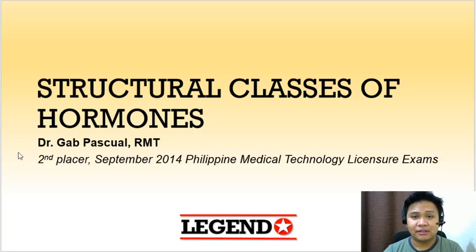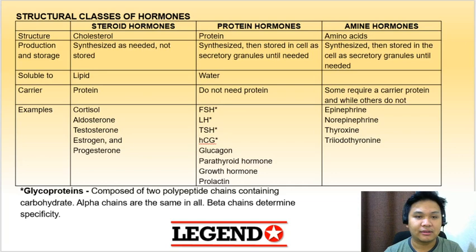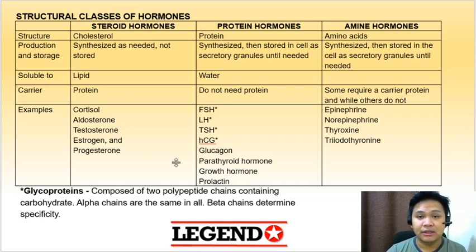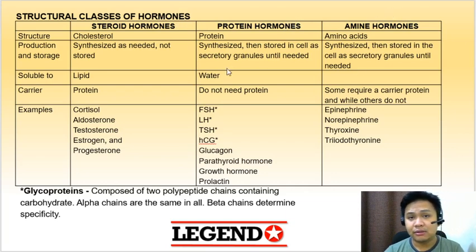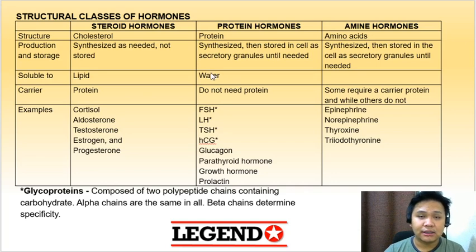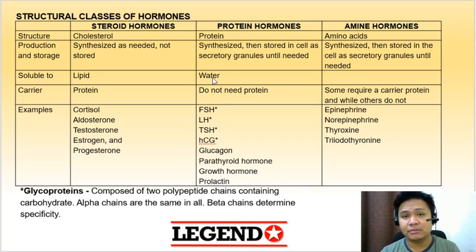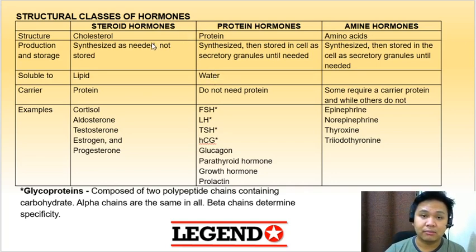This video is on the structural classes of hormones. There are three structural classes of hormones: steroid hormones, protein hormones, and amine hormones. It is important to know the structural class of your hormones since the properties as well as how these hormones behave depend on their structure.